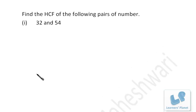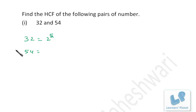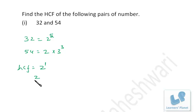Let's do some problems on finding the HCF of given numbers. I'll show you both methods: prime factorization and division method. In the first case we find the HCF of 32 and 54. By prime factorization: 32 = 2⁵ and 54 = 2 × 3³. Taking the least power of the common factor 2, which is 2¹, the HCF is 2.